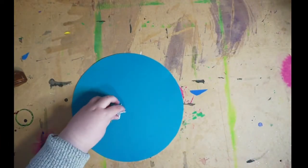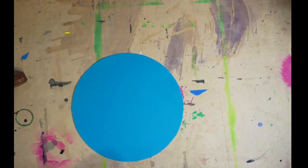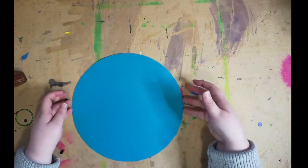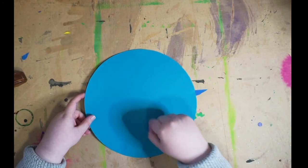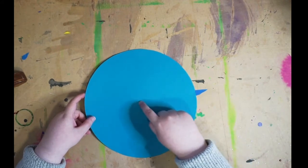First thing you're going to do is you're going to cut your colored paper into a circle which I've already done here. And then you're going to figure out where the center of your circle is.